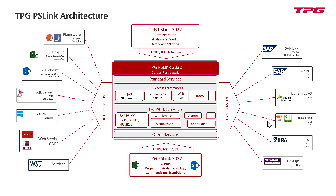PS Link itself is a modular concept — an integration product and software on its own — consisting of a framework and different connectors, because not every customer needs everything. You can purchase just the things you need. Every dashed line represents a connection between PS Link and a target or source system. Of course, there's a user account and password behind it, with authorization, so we can only do what the service account is allowed to do in SAP, Planisware, or SharePoint.